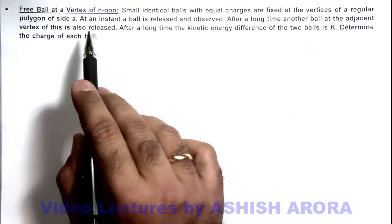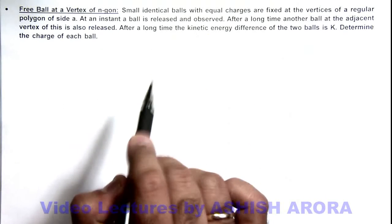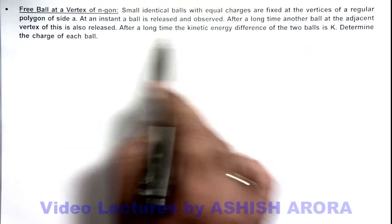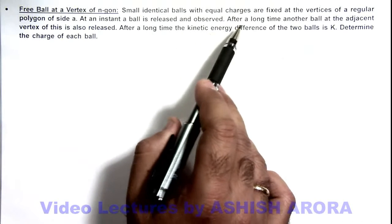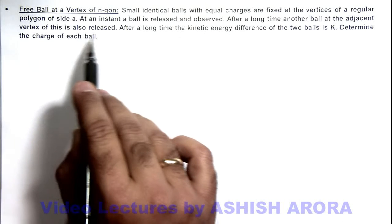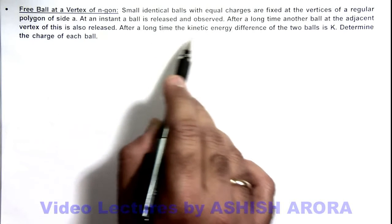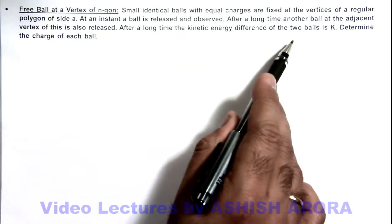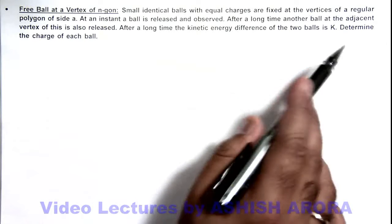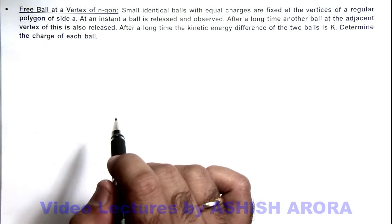At an instant the ball is released and observed. Obviously it'll be repelled and move away. After a long time another ball at the adjacent vertex is also released, and it is asking after a long time the kinetic energy difference of the two balls is K, and we are required to determine the charge on each ball.